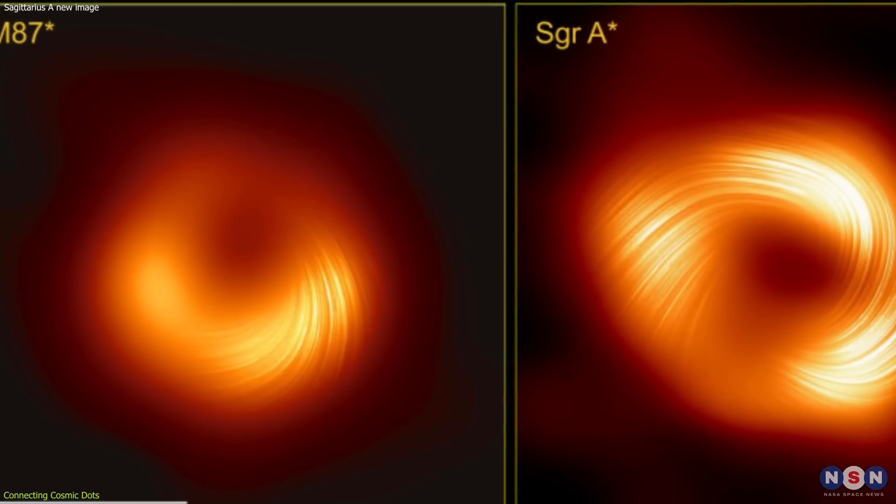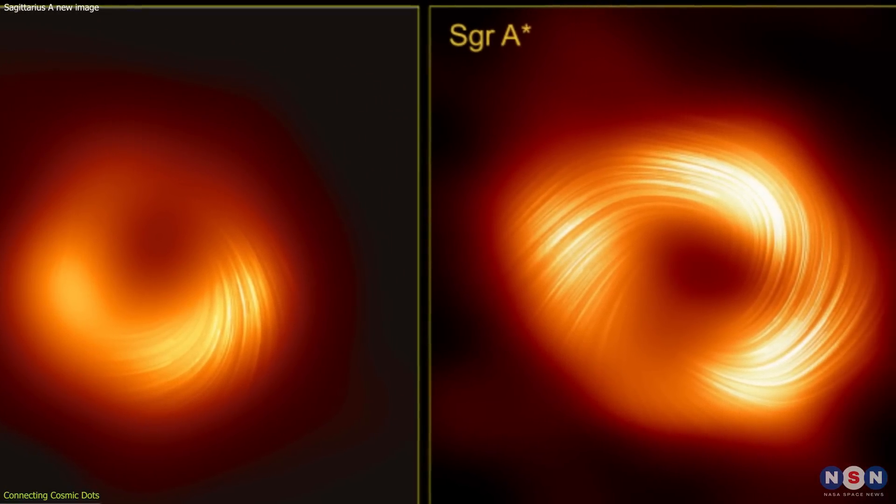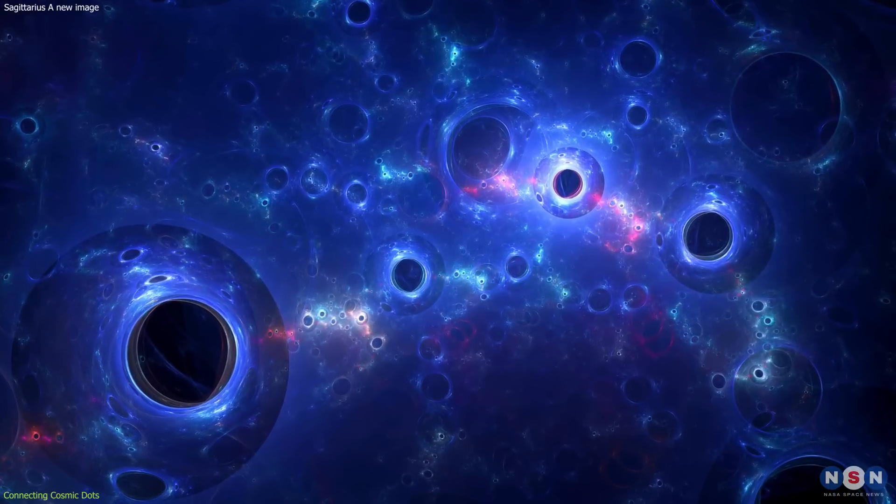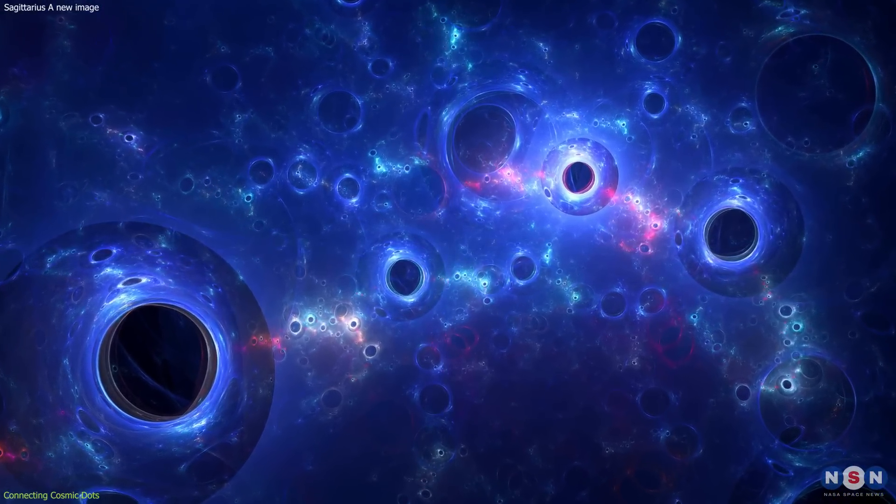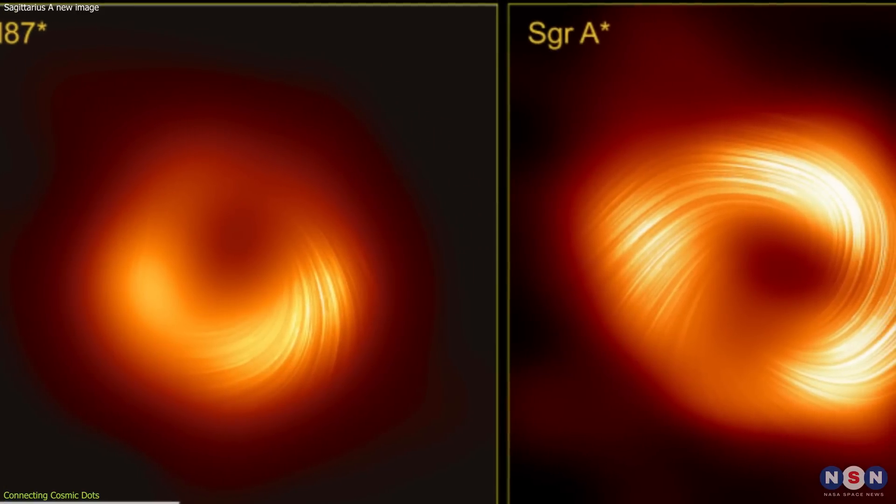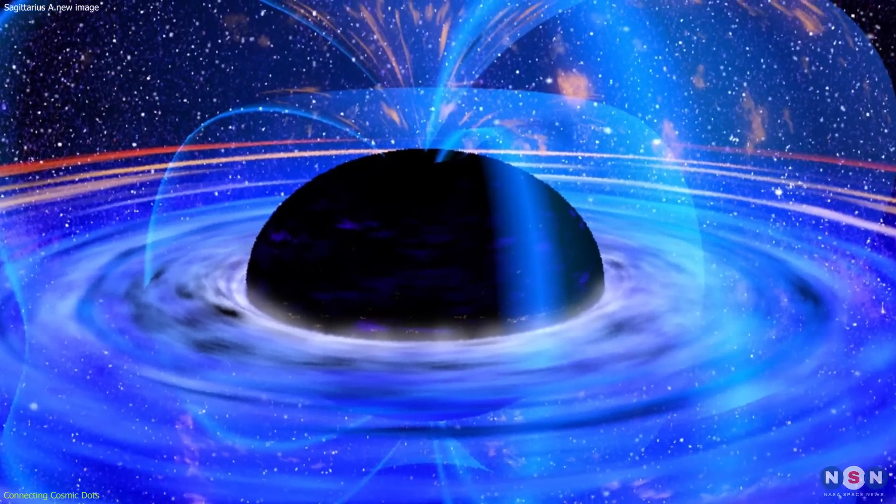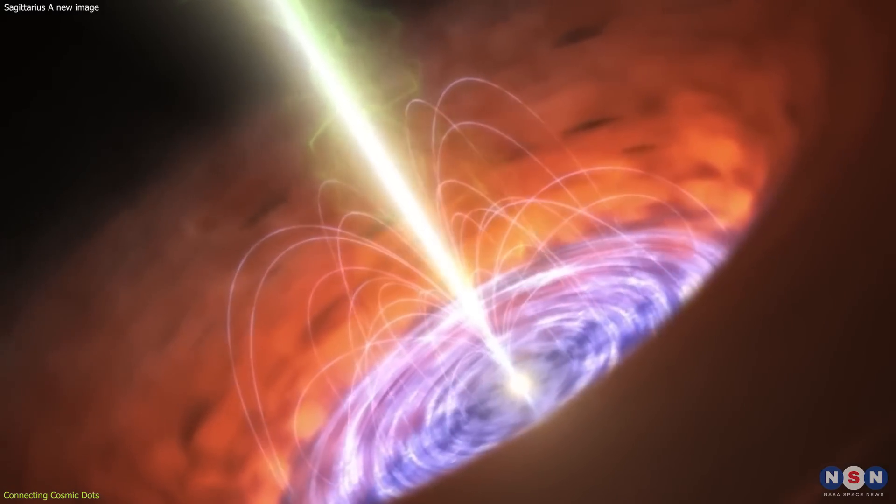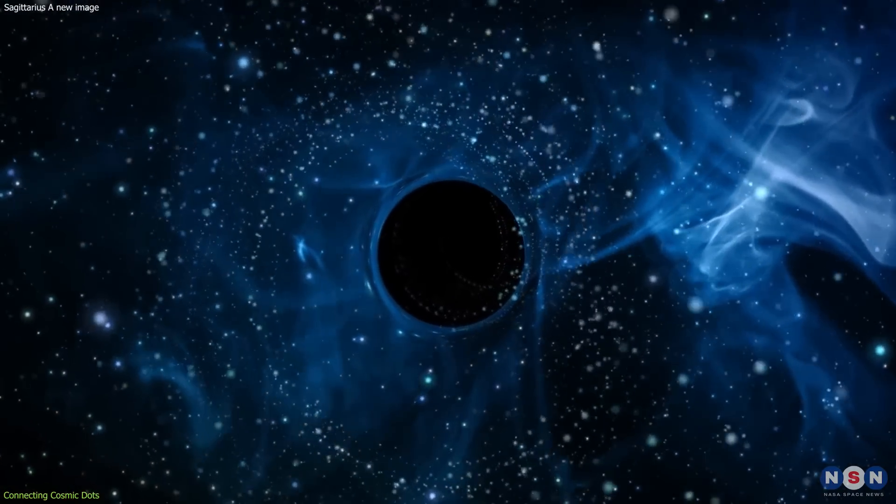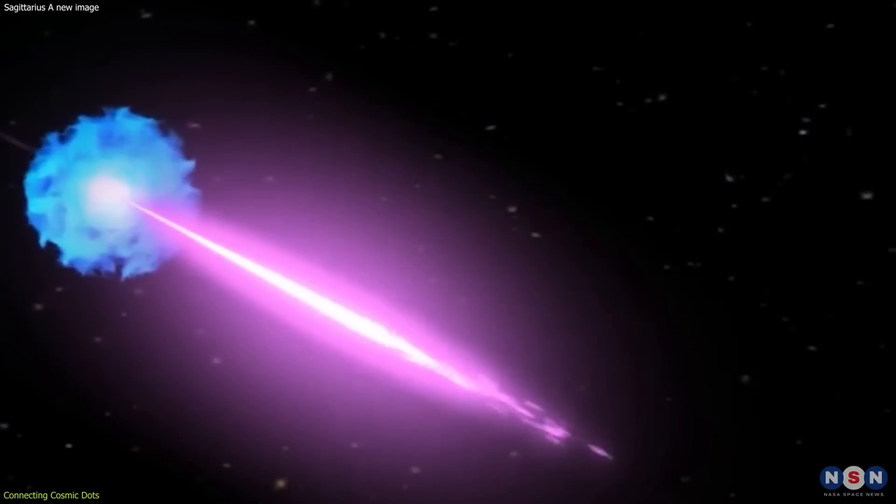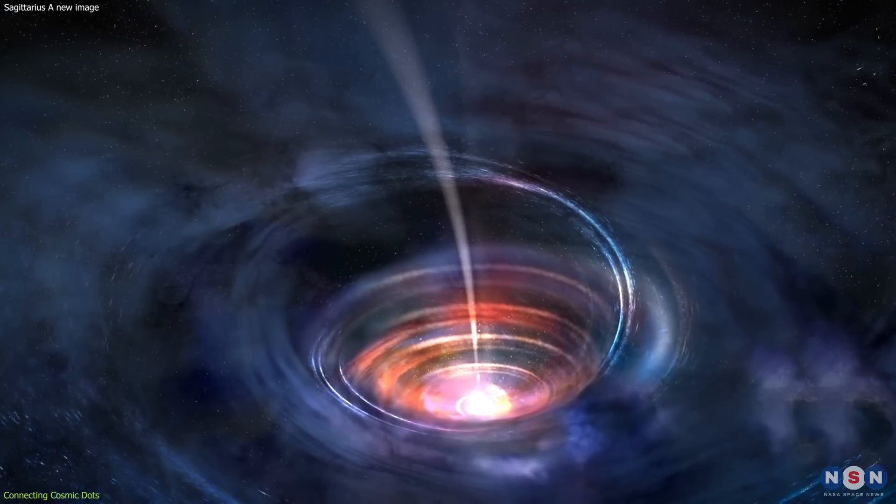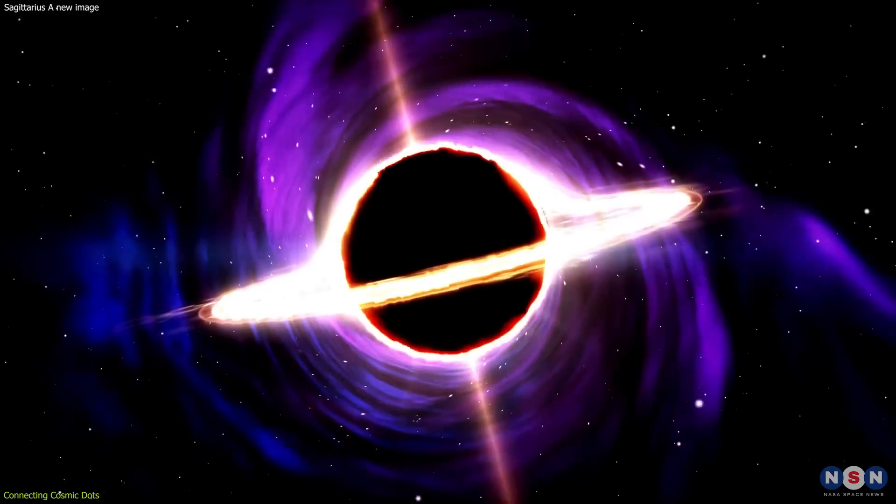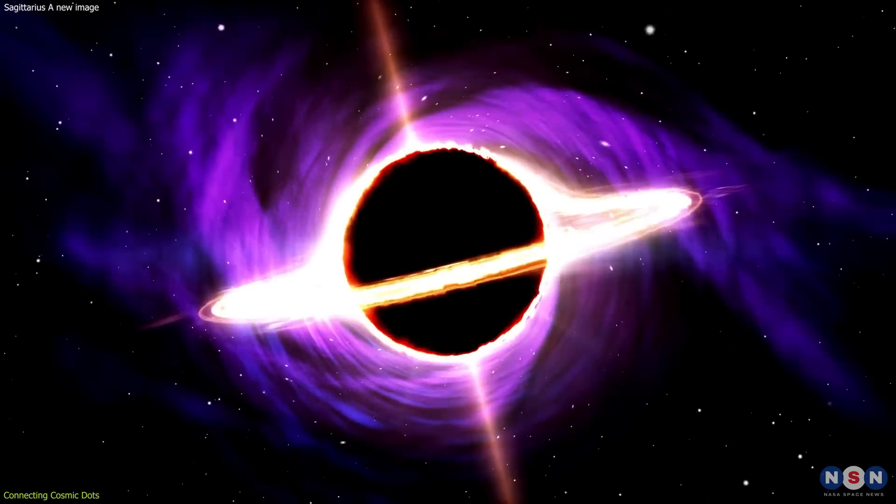It implies that there are fundamental processes at play in the vicinity of black holes, shaping their behavior and interactions with the surrounding matter. This insight is a stepping stone for astronomers, offering a new lens through which to study and understand the myriad black holes scattered across the cosmos. The new findings also underscore the role of magnetic fields in the mechanics of black holes. These fields, far from being mere byproducts, are integral to the accretion of matter and the generation of jets. They act as cosmic sculptors, molding the flow of gas and dust into the distinctive features observed around black holes.